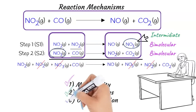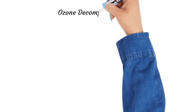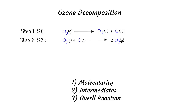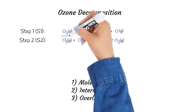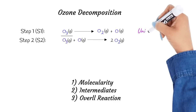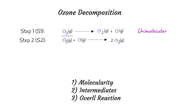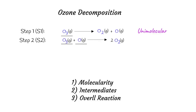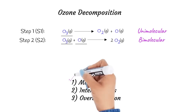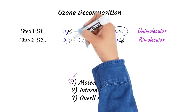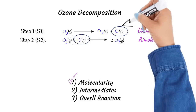Our next example is the decomposition of ozone, O3, according to the following reaction mechanism. In this example, there is only one reactant molecule, O3, involved in step 1, so we consider the first step a unimolecular reaction. However, in step 2, there are two reactants involved, O3 and O, so we call step 2 a bimolecular reaction. Here, O is produced in step 1 and gets consumed in step 2 during the reaction. Therefore, O is an intermediate of this reaction.